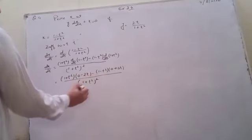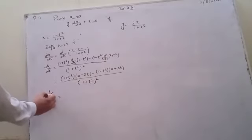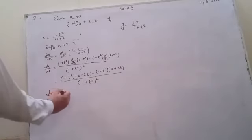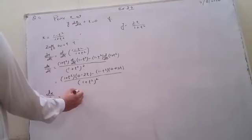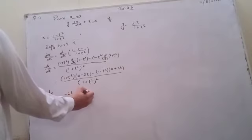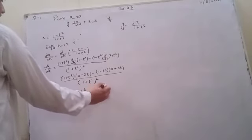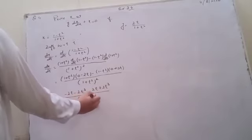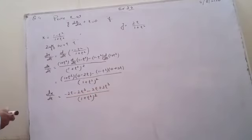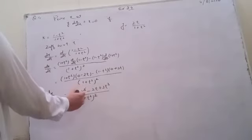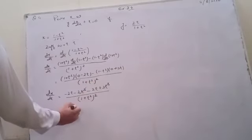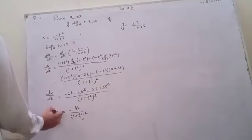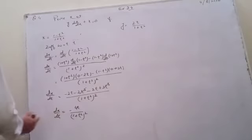This simplifies to: minus 2t minus 2t cube minus 2t plus 2t cube, over 1 plus t square whole square. The plus and minus 2t cube terms cancel, giving minus 4t over 1 plus t square whole square. This is dx by dt.